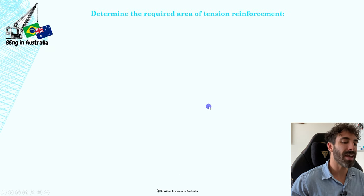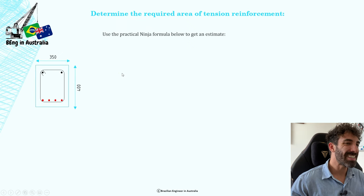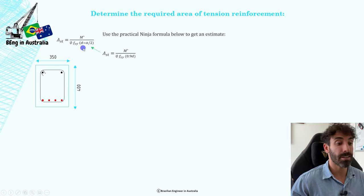To do so, we're going to use this ninja formula, which is the area of steel equals moment divided by phi times fsy times 0.9d. In case you're asking yourself where did you get this formula from, it is only a practical derivation of this formula here, which you might have seen when you studied singly reinforced concrete beams. So the problem with this formula is that we don't know 'a', because 'a' is a function of the area of steel, which is exactly what we're trying to figure out.